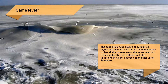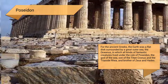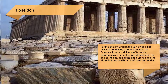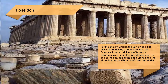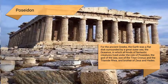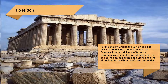For the ancient Greeks, the earth was a flat disk surrounded by a great outer sea called the Oceanus, in which all kinds of fantastic creatures lived under the rule of Poseidon, the god of the sea, son of the Titan Cronus and the Titan Rhea, and brother of Zeus and Hades.